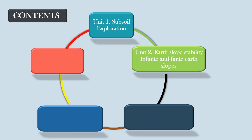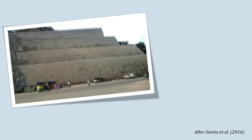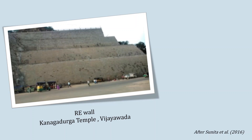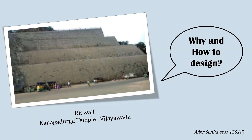I hope many of you have been to Kanagadurga Devi Temple at Vijayawada. Here is its 44-meter high retaining wall, which is constructed to widen the hilly road. What is this retaining wall? Why and how do we design such a retaining structure? To find an answer, just get into Unit 3 on Earth Pressure Theory.